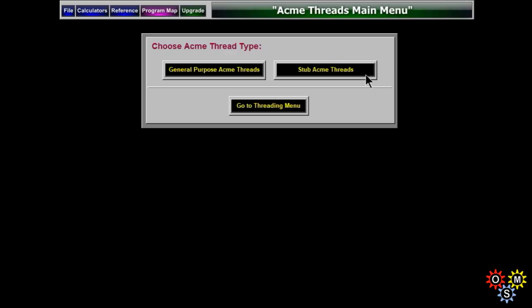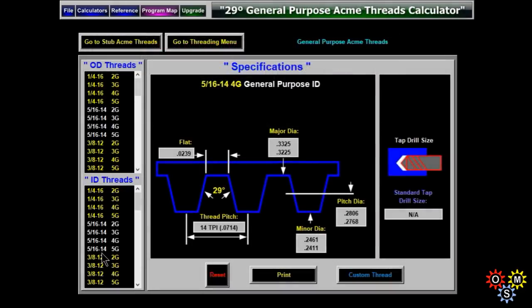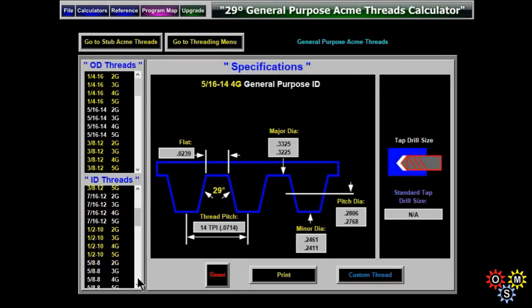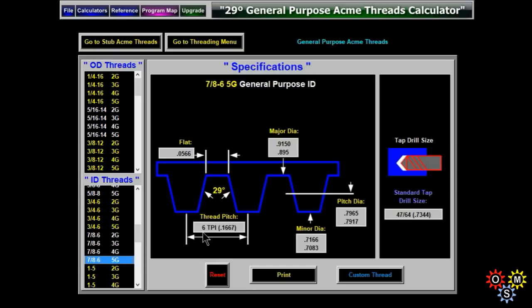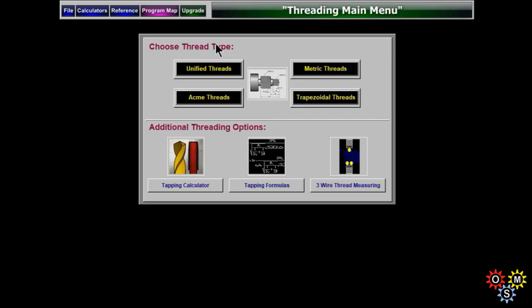Now, a thread calculator is pretty useful. In particular, if you're wanting information on an Acme thread, which is a rather specialized animal. ID threads, probably the most critical in some respects. Adam Booth did one recently. I've selected seven eighths. His was probably somewhat bigger than that. But for an ID thread, it's pretty critical to know what dimensions you need.